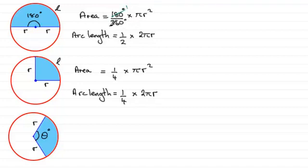180 into 180 goes 1, and 180 into 360 goes 2. So we get half the area of a complete circle.